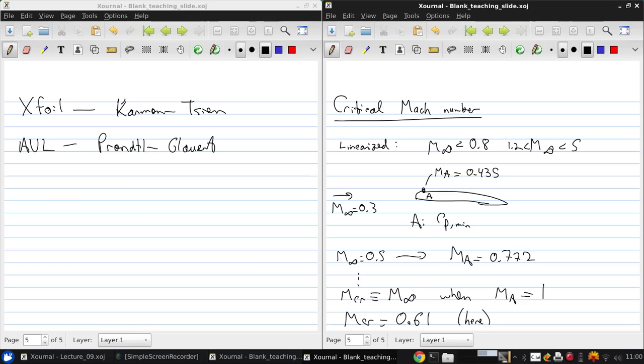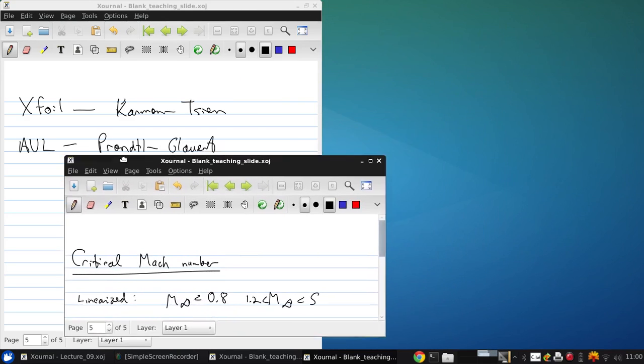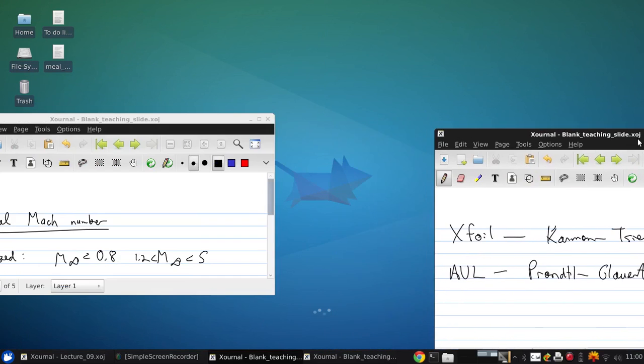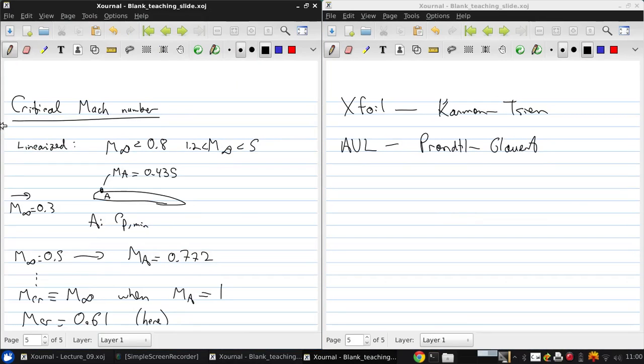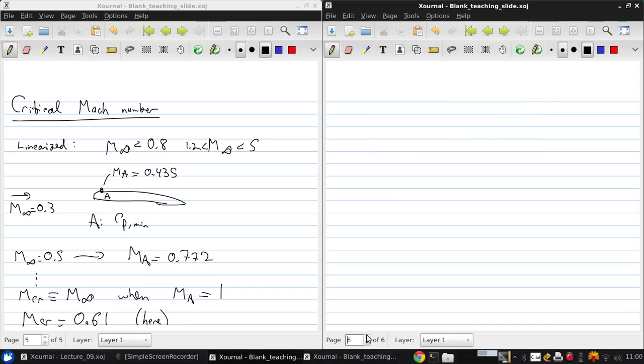Determining this critical Mach number for a given airfoil is very important, because when the free stream Mach number is greater than the critical Mach number, the drag coefficient of the airfoil increases dramatically. We'll discuss that phenomena next time, but here we're going to develop a method for estimating the critical Mach number.